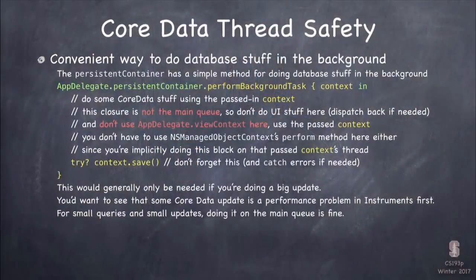Even if it has to dispatch, it will do it if it has to. If you're already on the right queue, it'll just execute it. But if you're on the wrong queue right now, it will dispatch to the right queue. There's also performBlockAndWait, which will get it on the right queue, wait till it's done, and then continue in your queue. But this doesn't really talk about how do I get another context in a different thread. I wanna do some code on another thread — where do I get a context? The only context I know how to get right now is viewContext, which is the main queue's context. You're gonna use a really cool method in persistent container.